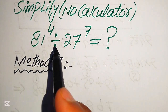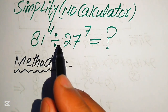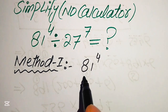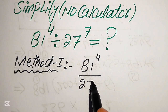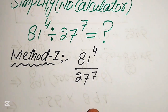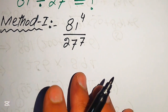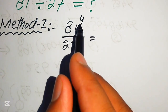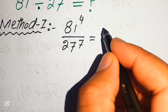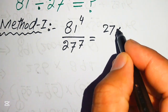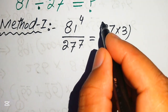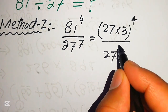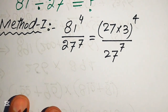For the first method, we rewrite the expression as 81 to the power of 4 divided by 27 to the power of 7. We first focus on the numerator, which is 81 to the power of 4, and its base is 81. We write 81 as 27 multiplied by 3, with exponent 4, divided by 27 to the exponent 7.